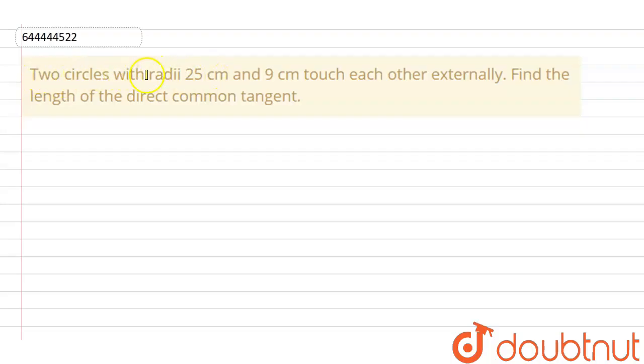Two circles with radii 25 cm and 9 cm touch each other externally. Find the length of the direct common tangent.